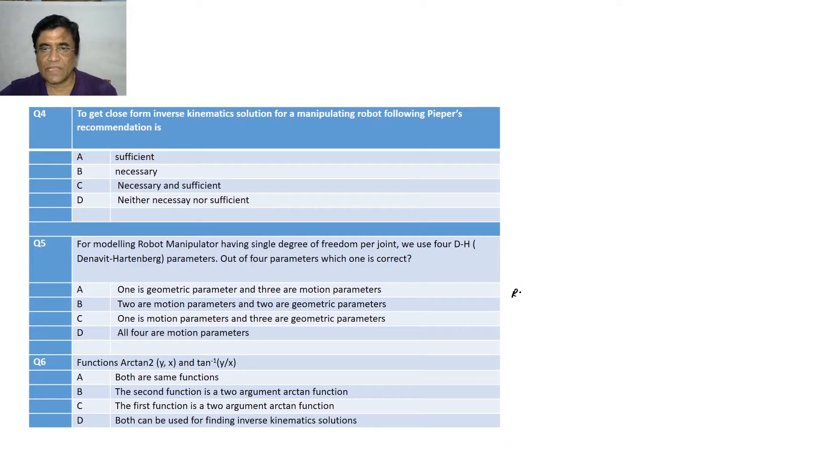For example, if it is a revolute type of robot like PUMA, one, two, three, four, five, six. PUMA has all six revolute joints. And between two successive joints, it will have DH parameters. What are those DH parameters? DH parameters actually, as you know, one is motion parameter about Z axis, then the distance between two successive common normals, which is denoted by di. And the common normal, which is the minimum distance between two successive Z axes.